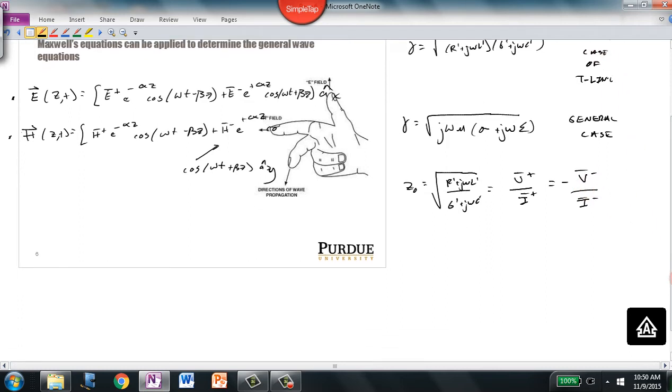A similar quantity exists for any medium and for a general plane wave. Instead of using Z0, we used a new symbol, eta. It kind of looks like a little cursive N. We defined eta as the ratio of the forward traveling component of the E field to the forward traveling component of the H field.